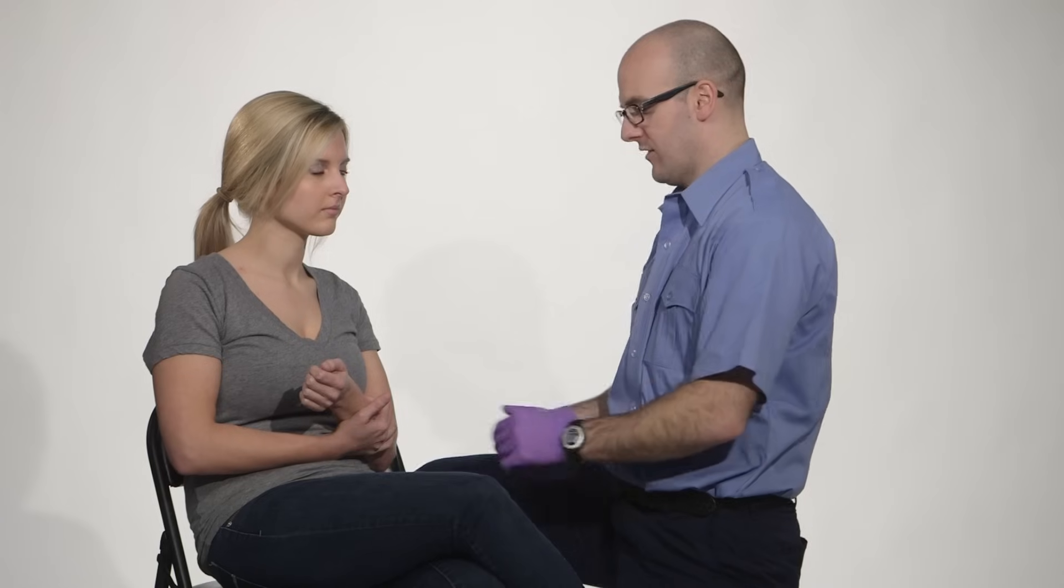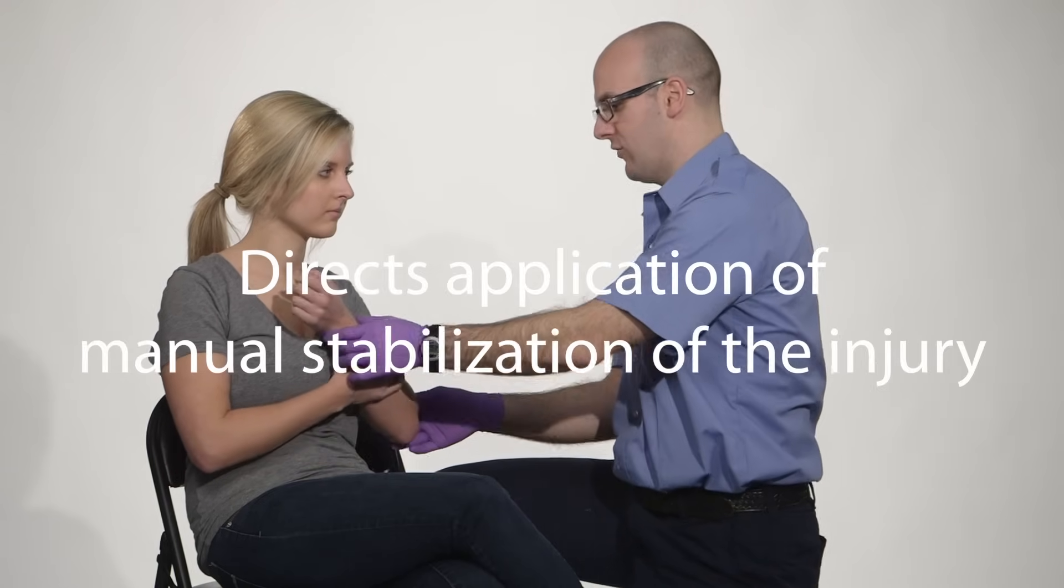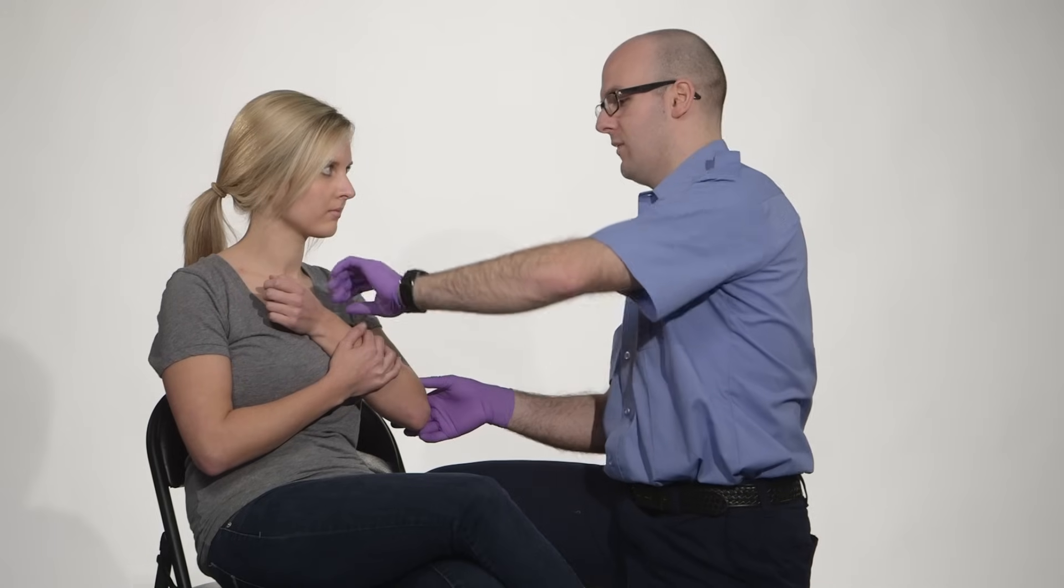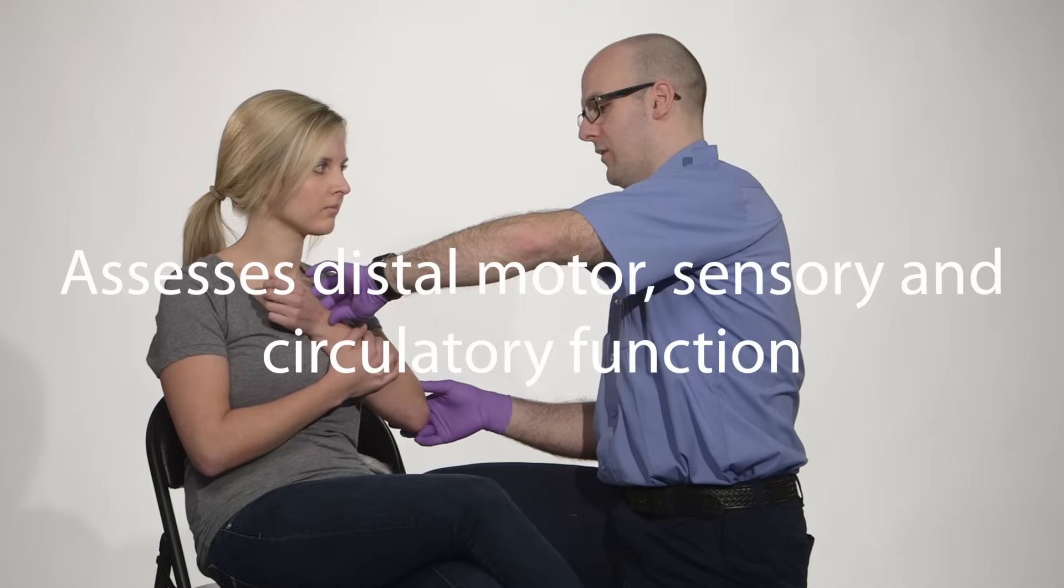The first thing I'm going to do is have the patient splint her arm in a position of comfort. So if you could just hold that, however it's comfortable for you. I'm going to check CMS. So first I'll check a pulse. I have a pulse.